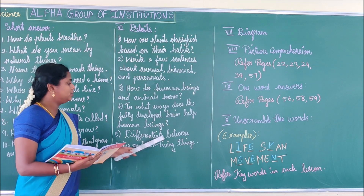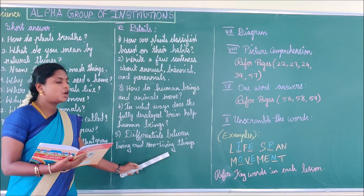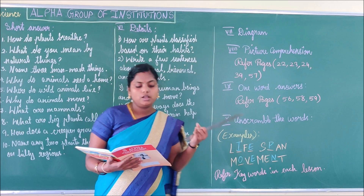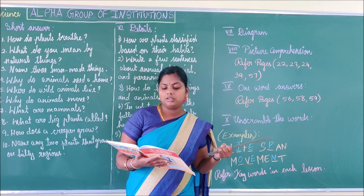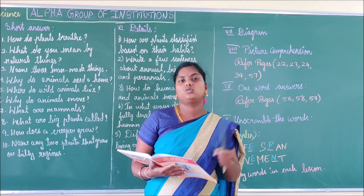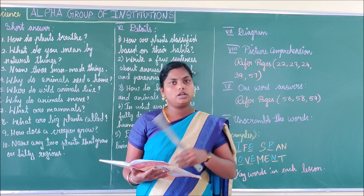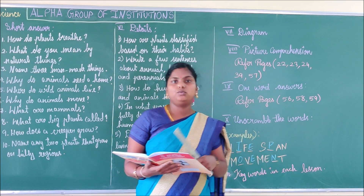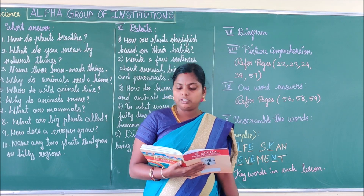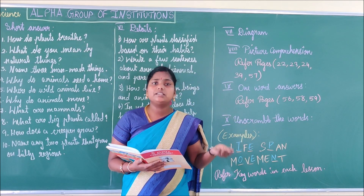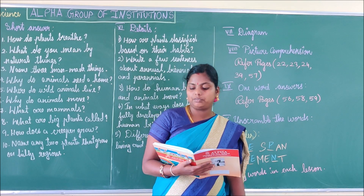Next question: Differentiate between living and non-living things. All living things breathe to live; non-living things do not breathe. All living things can move; non-living things cannot move. All living things need food and water for their survival; non-living things do not need food and water.